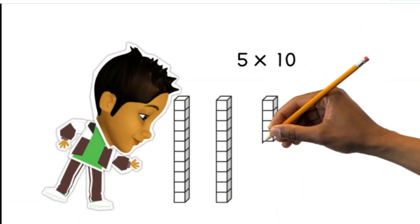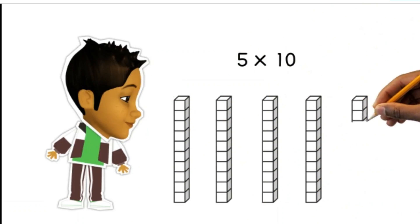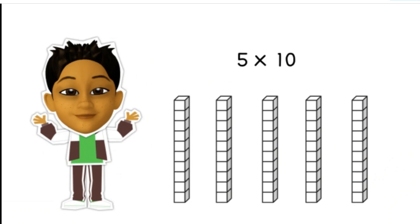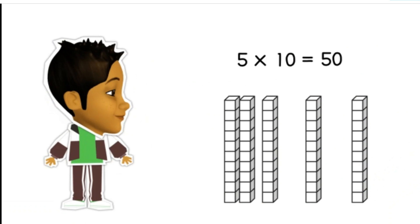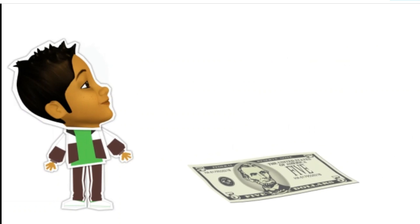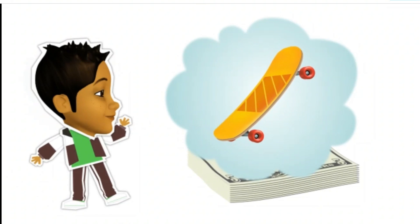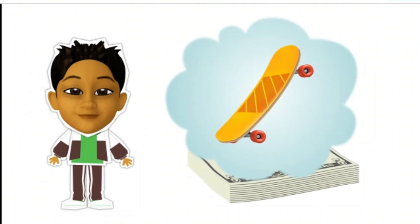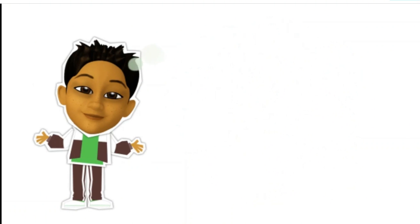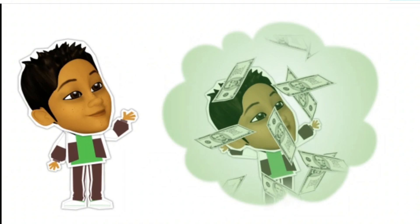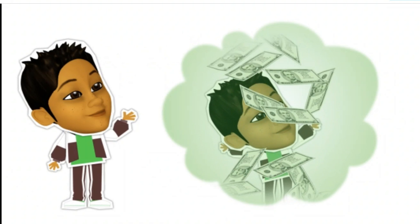5 times 10 is 5 groups of 10, or 50. Correct! At this rate, after 10 weeks, you will have enough to buy a $50 skateboard. What do you think? Hmm, I don't think so. Maybe I can convince my parents to increase my allowance to $8 a week.